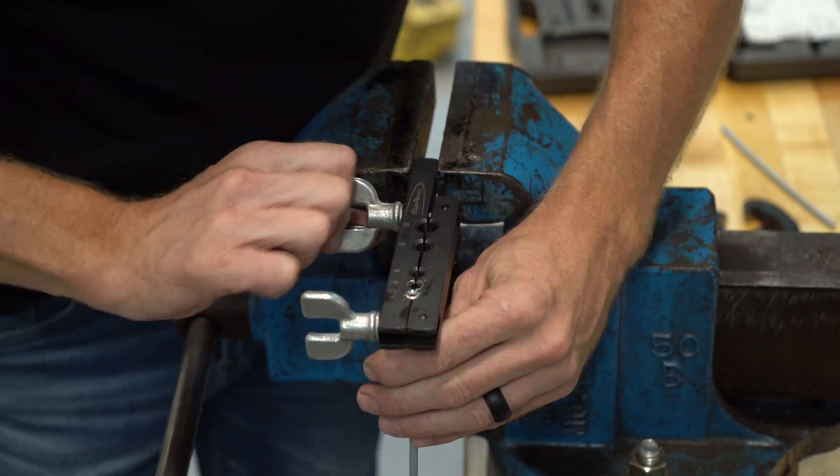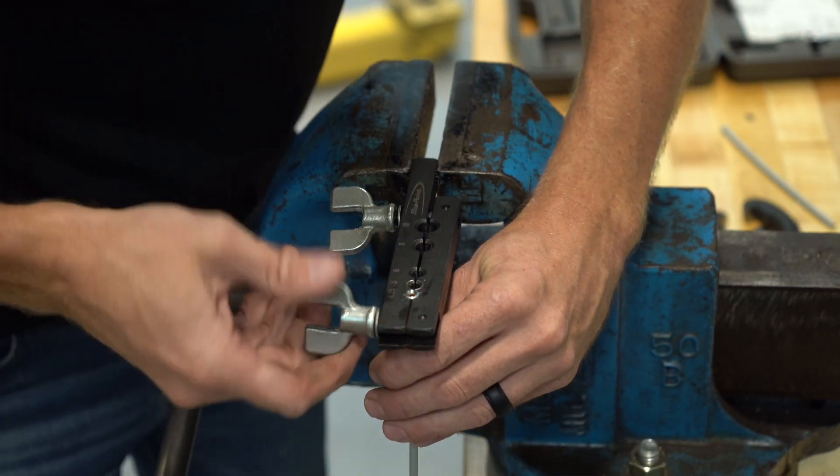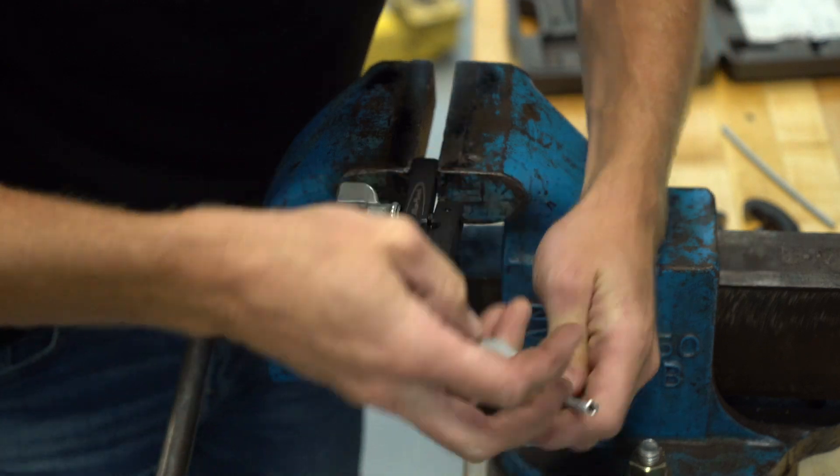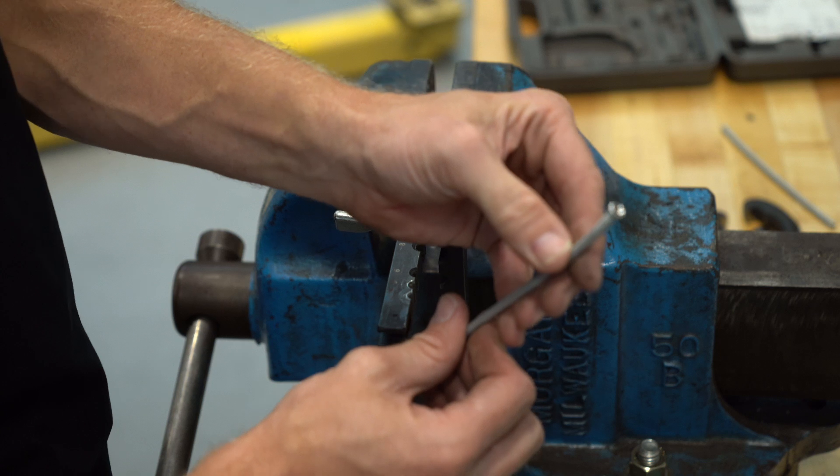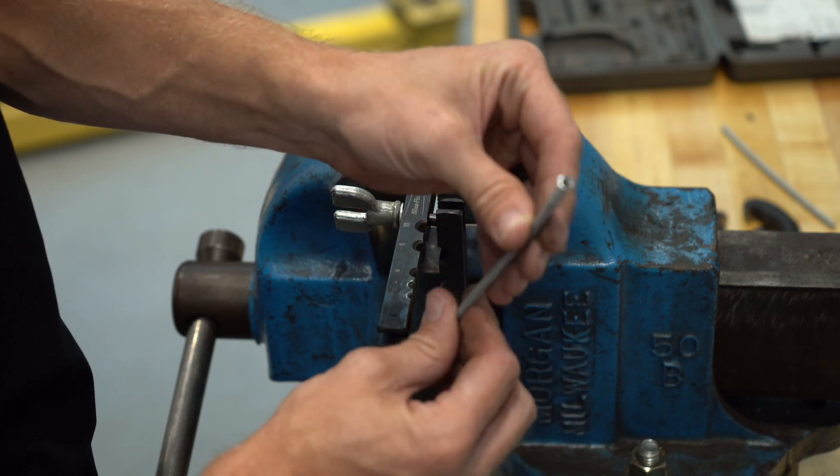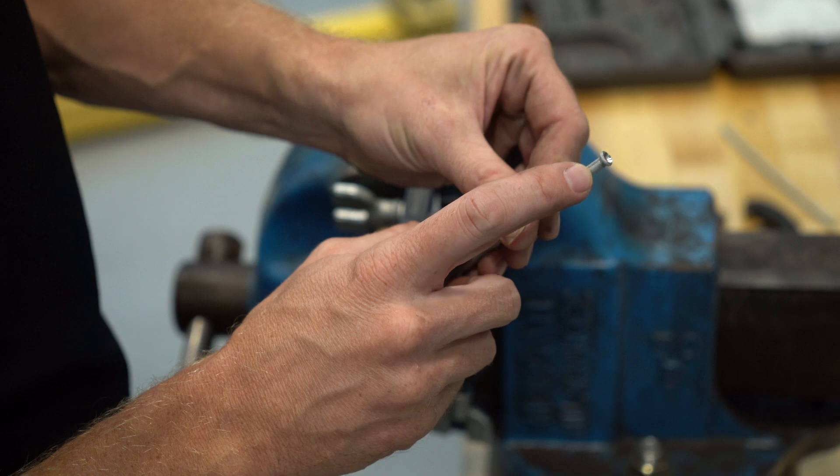We'll loosen our tool and pull our brake pipe out. Let's see how we did. You can see there we have a double flare. And that one actually looks pretty good.